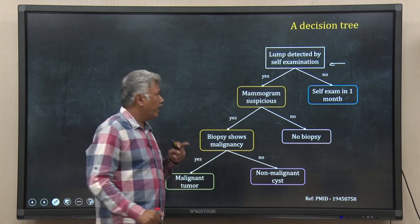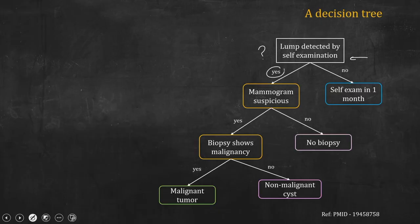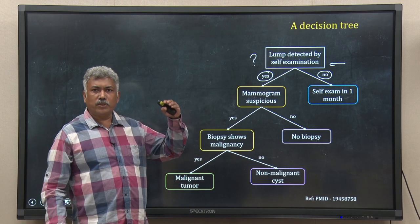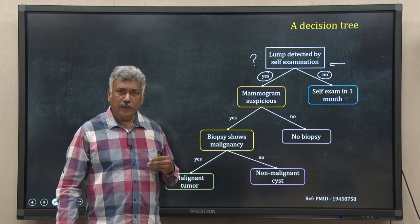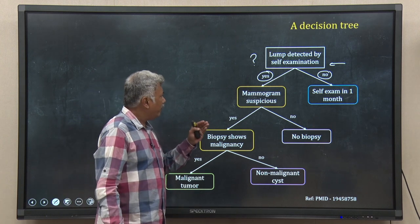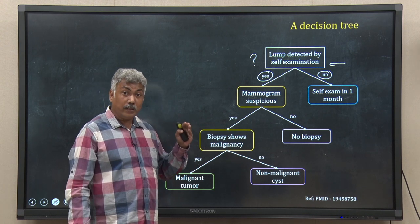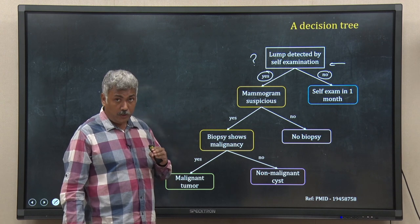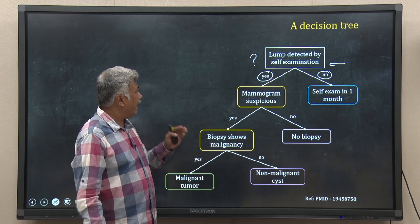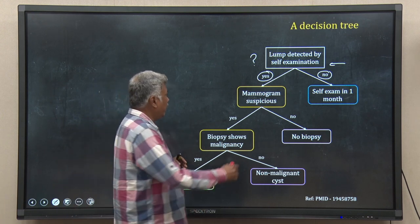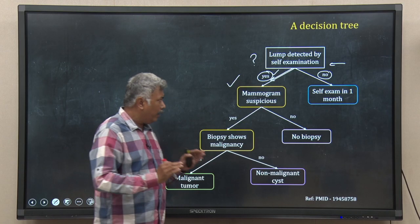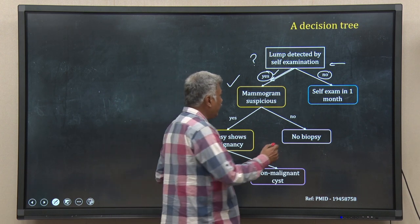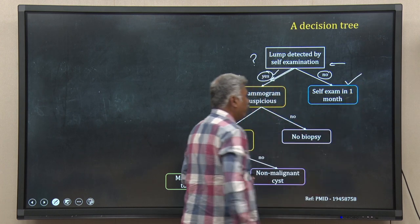At every node, we are asking a question and that question has a yes/no answer. At the root of this tree, at the topmost node, suppose a person comes to the clinic after doing self-examination. The clinician asks: has the person detected the lump by self-examination or not? If yes, the clinician follows that path and decides to go for a mammogram. If the lump was not detected, she will be recommended to do a self-examination, maybe after one month.